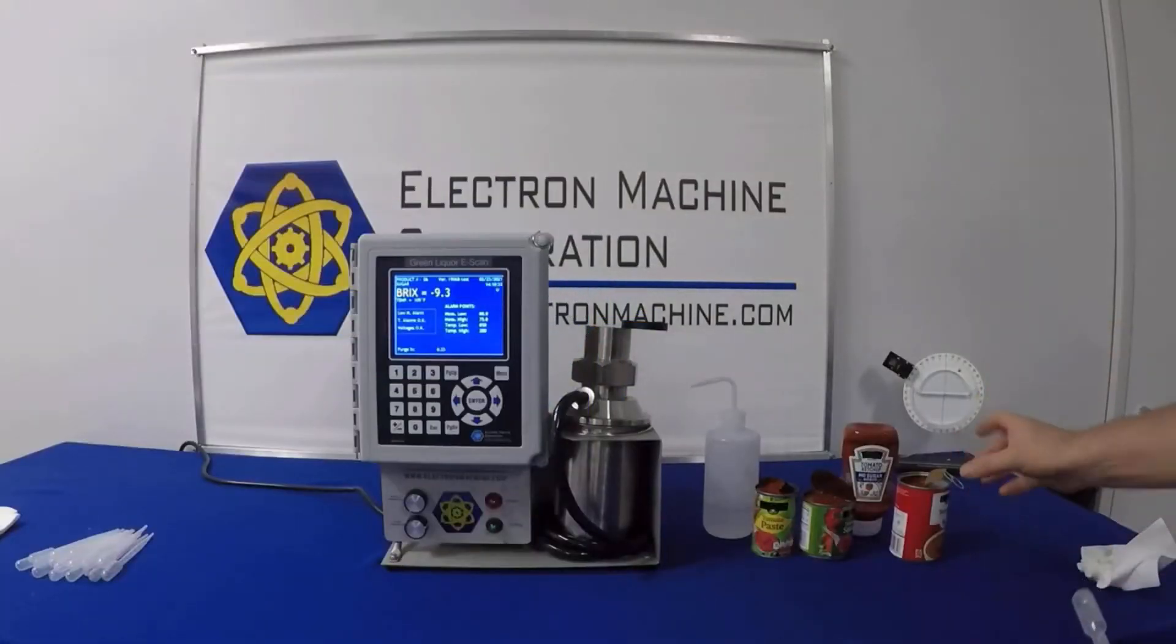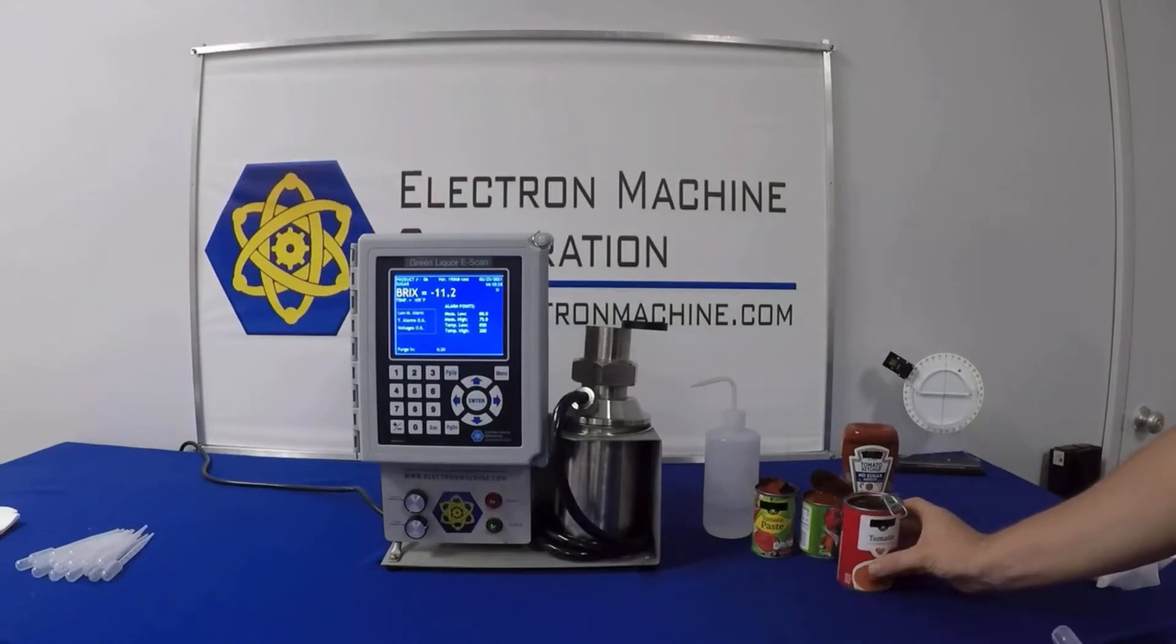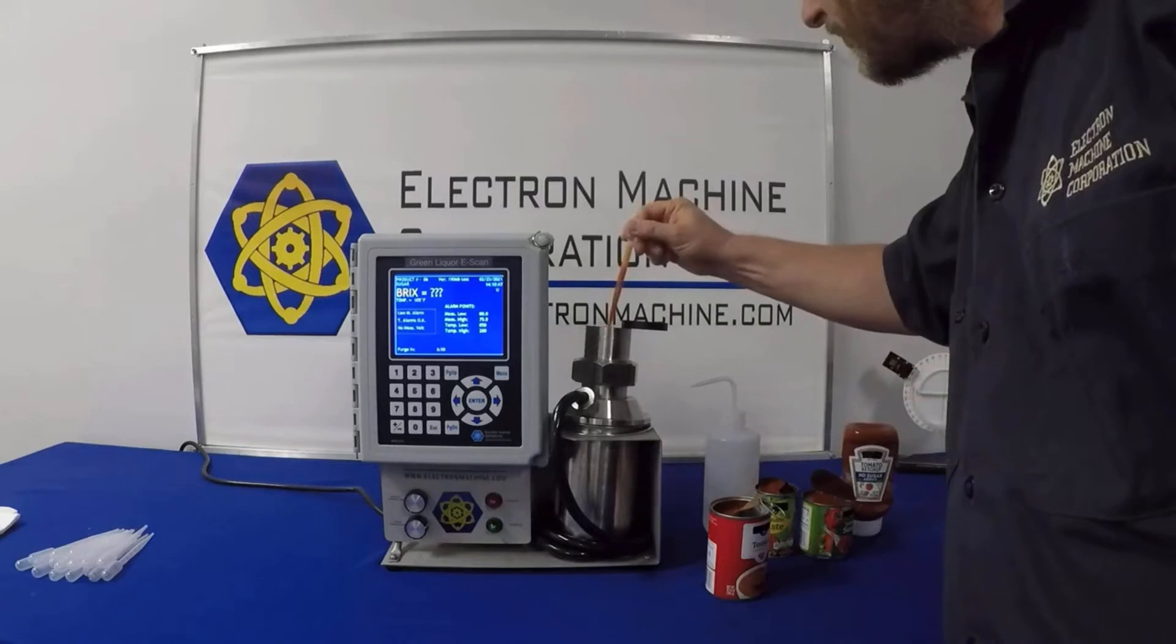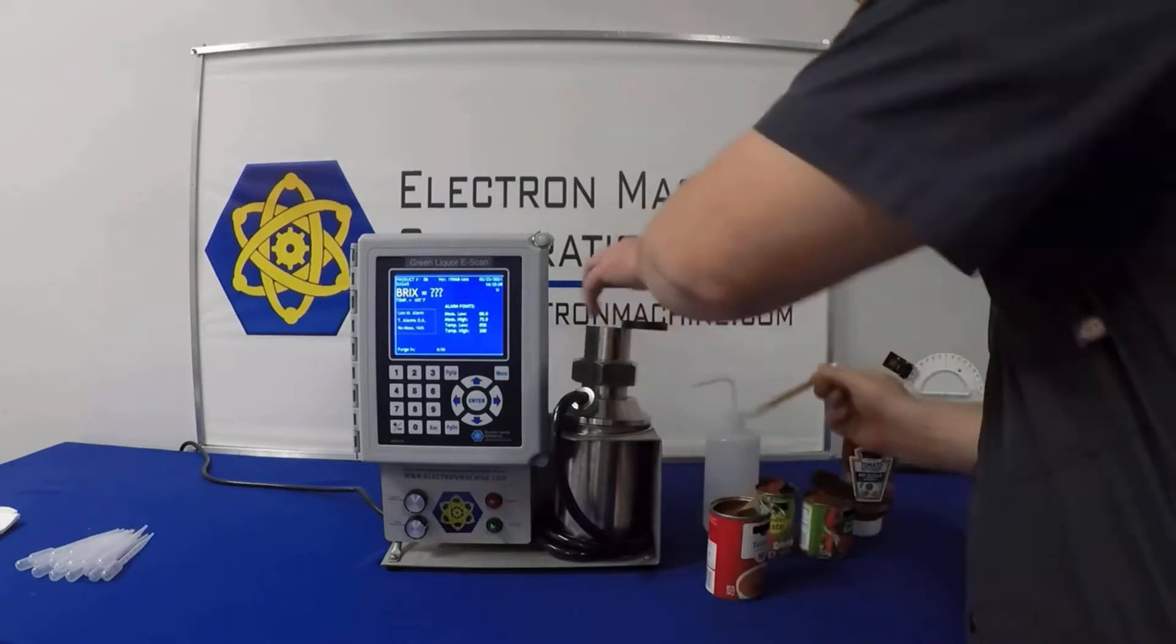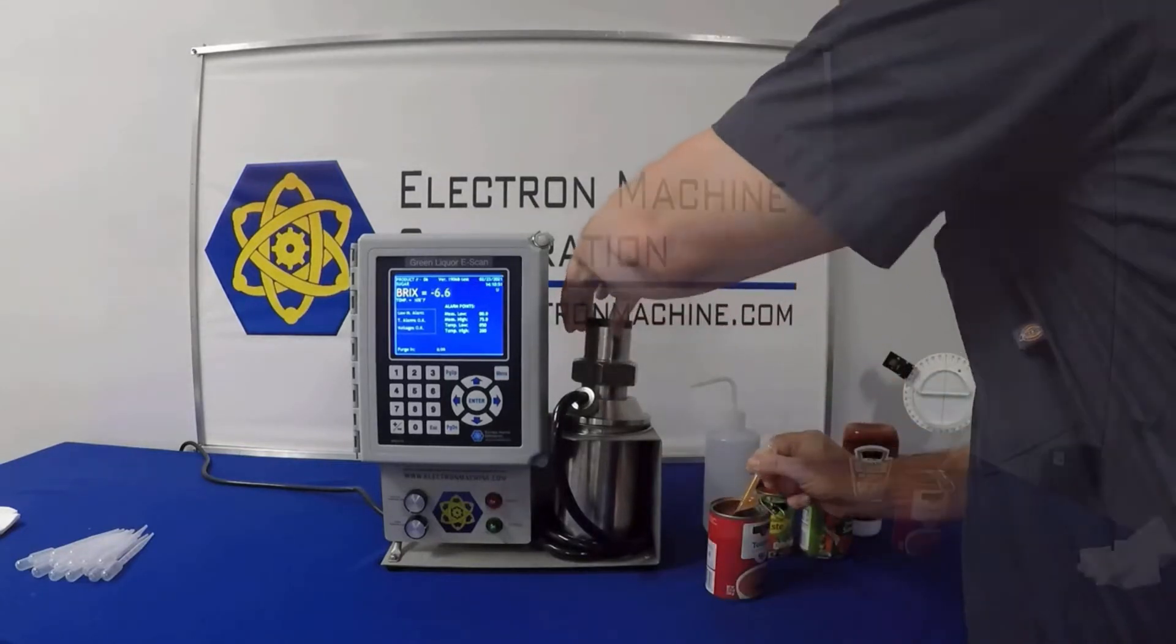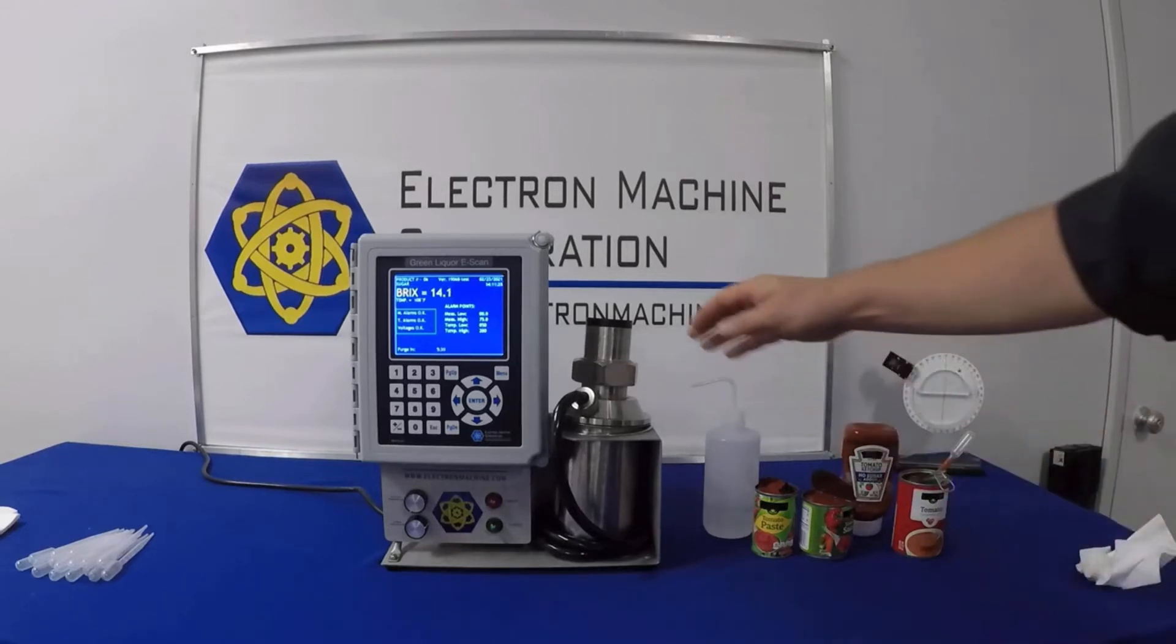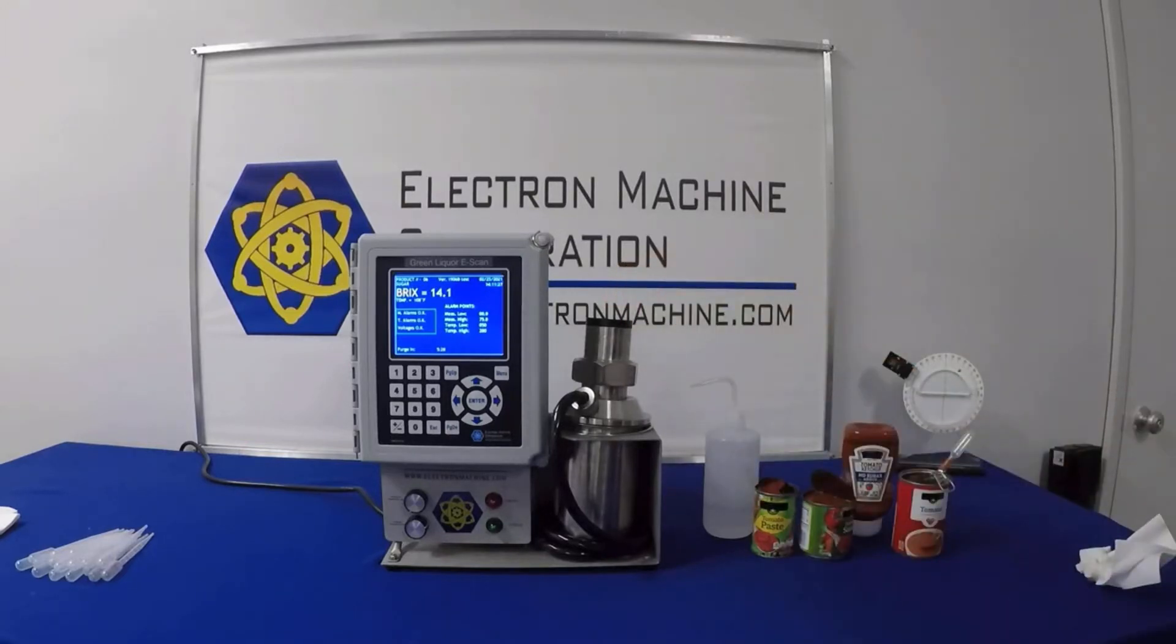For our first product, we're going to start with a tomato condensed soup. Brix readings for condensed soup are important because it allows you to evaporate the water out of the process by maintaining a consistent product. That way, when you combine your next can of water with the can of condensed soup, you get a similar taste and process.